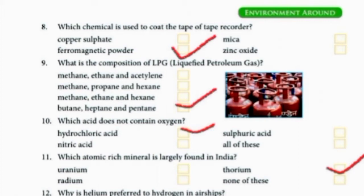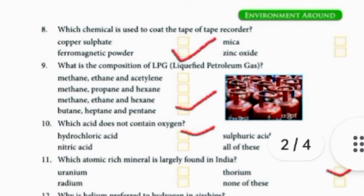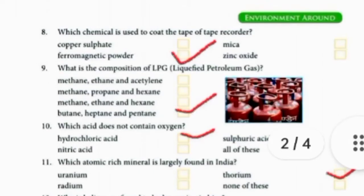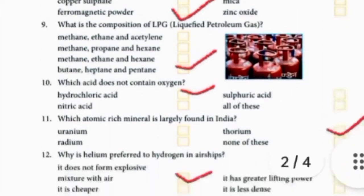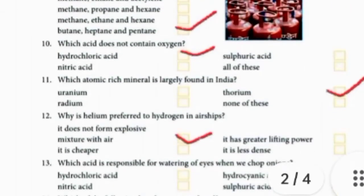Which atomic-rich mineral is largely found in India? In India, the atomic-rich mineral that is found is thorium.